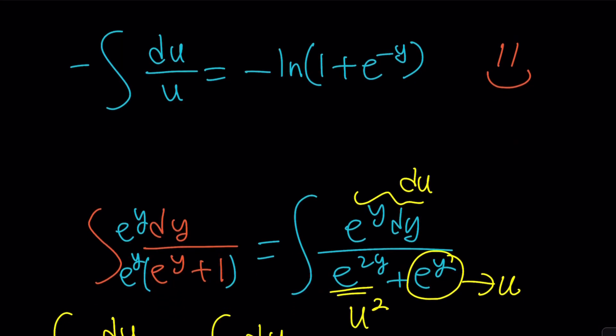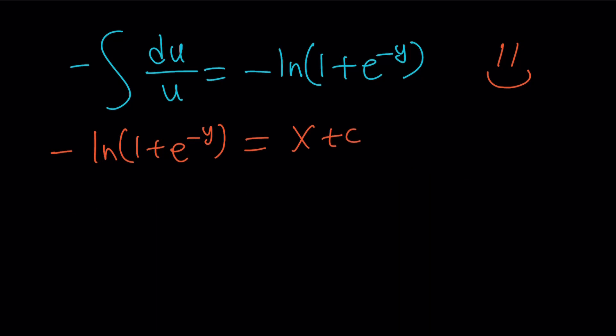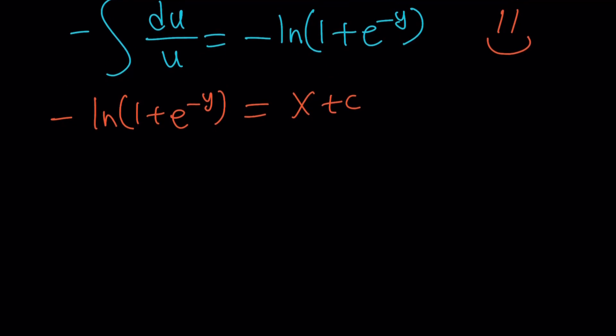So that's our result. So our equation, the solution, is going to be like this. Let's go ahead and write it down. Negative ln 1 plus e to the negative y equals x plus c. So from here, you may want to solve for x. I don't know if you want to do it, but if you do, then it's going to look like the following.